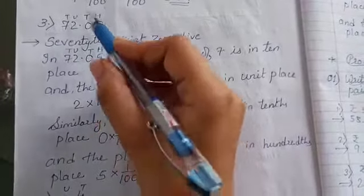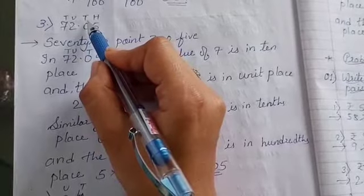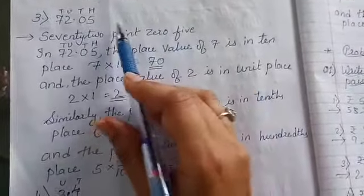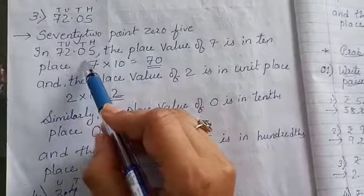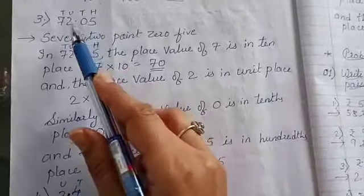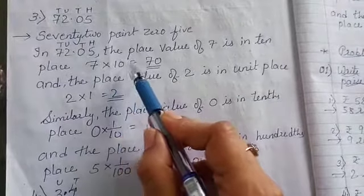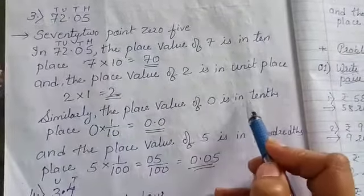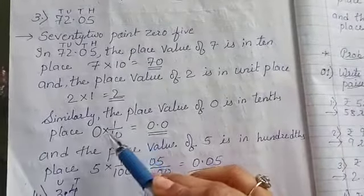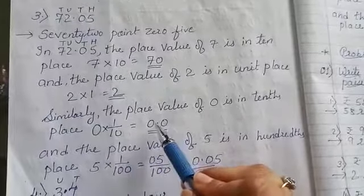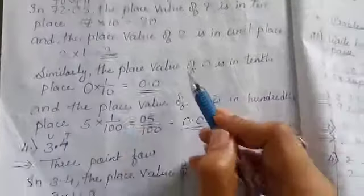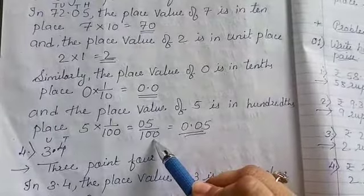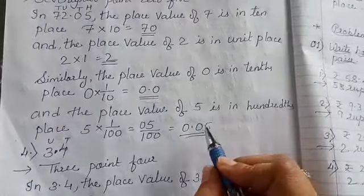Now see the third one: 72.05. First, before the point, write unit and tens; after the decimal, write tenth and hundredth. In 72.05, the place value of 7 is in the tens place — 7 multiplied by 10 equals 70. The place value of 2 is in the unit place — 2 ones are 2. The place value of 0 is in the tenth place — 0 multiplied by 1 upon 10 equals 0.0. And the place value of 5 is in the hundredth place — 5 multiplied by 1 upon 100 equals 5 upon 100, so 0.05.